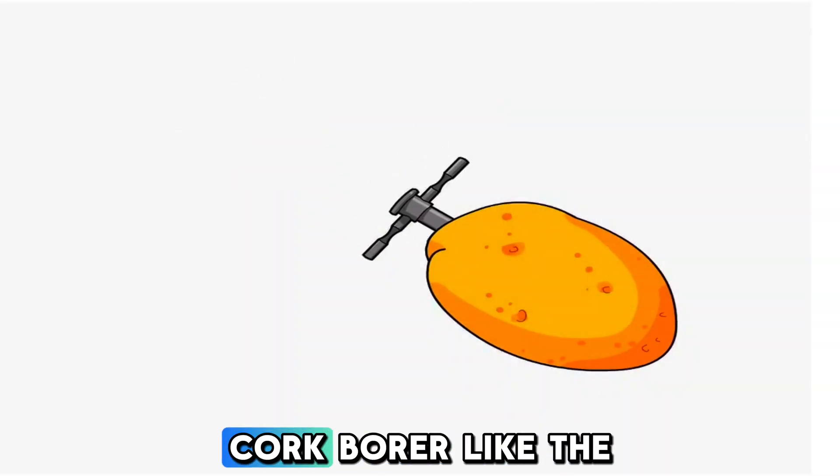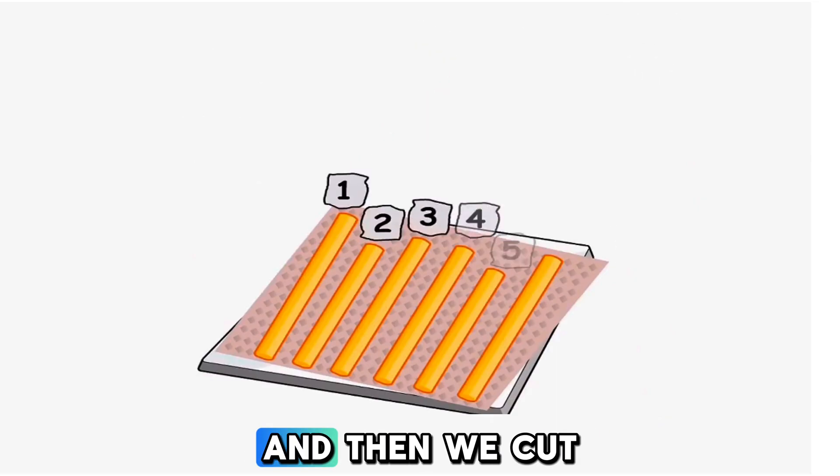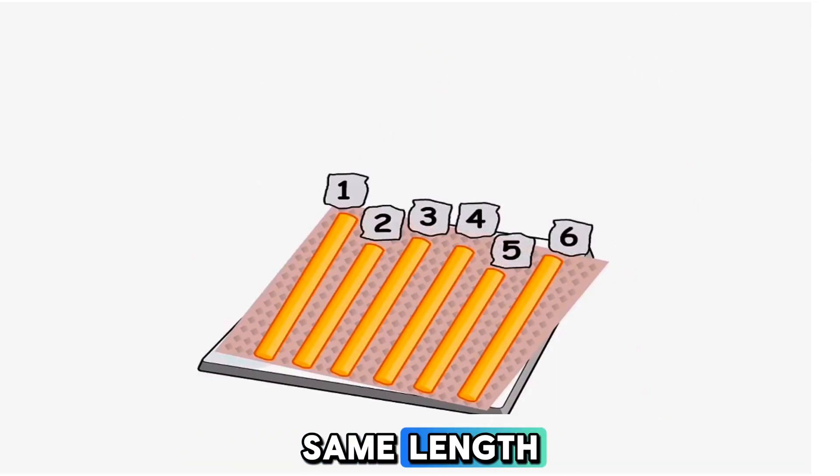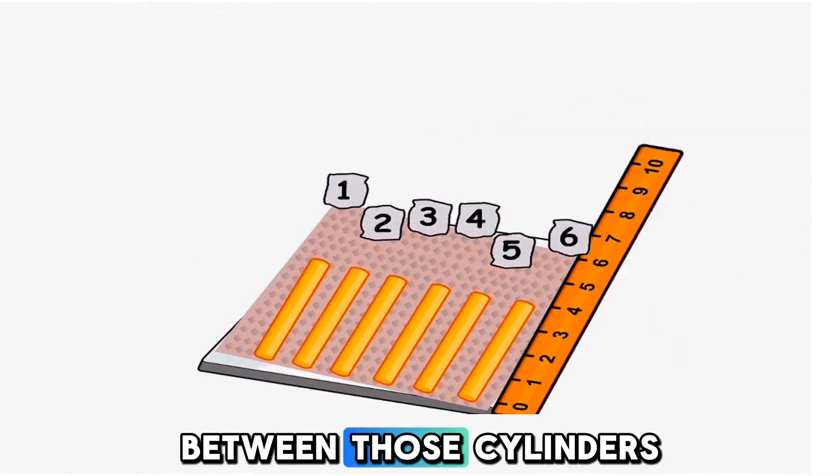We usually use a cork borer like the one you see here to form cylinders and then we cut those cylinders into the same length using a ruler so that it would be a fair comparison between those cylinders.